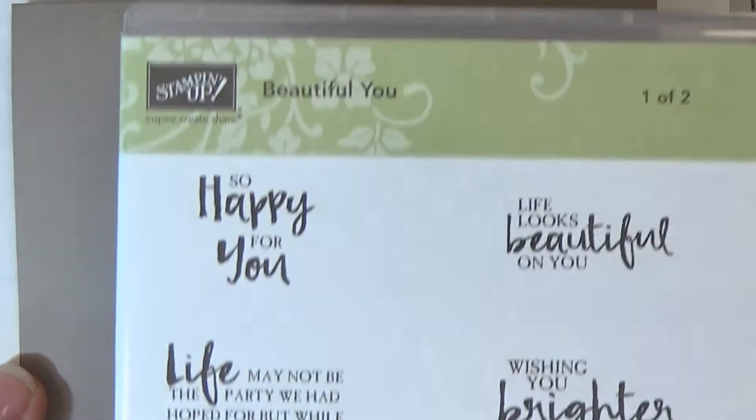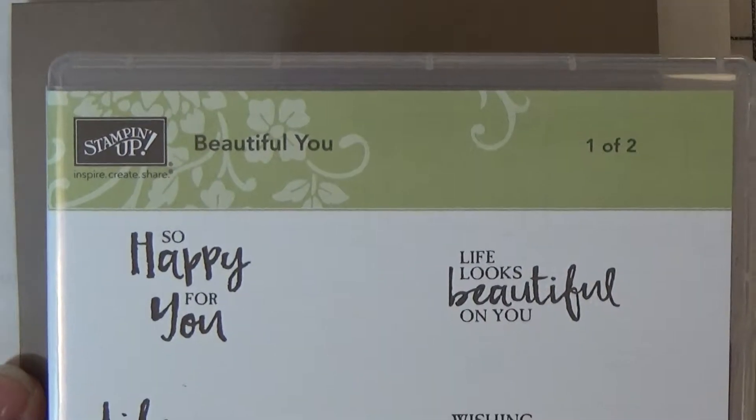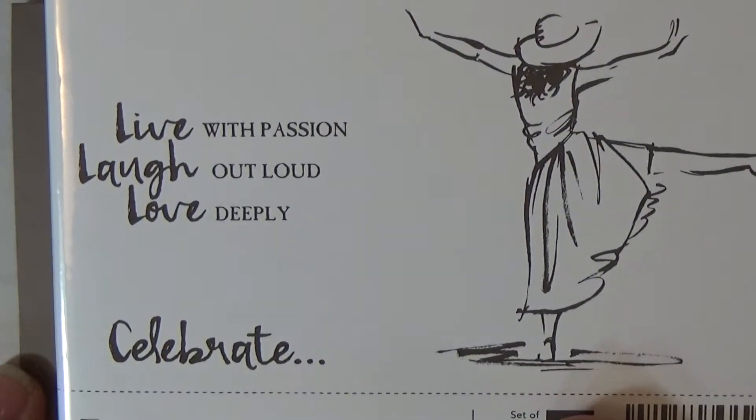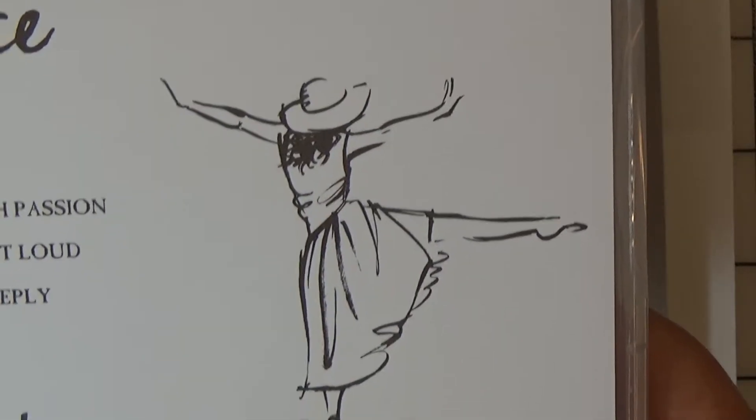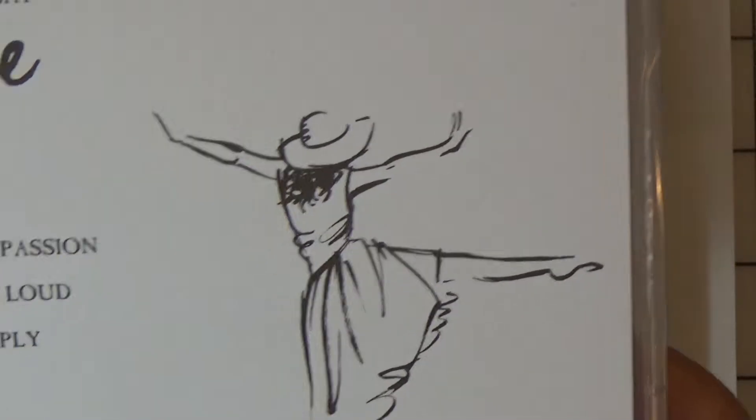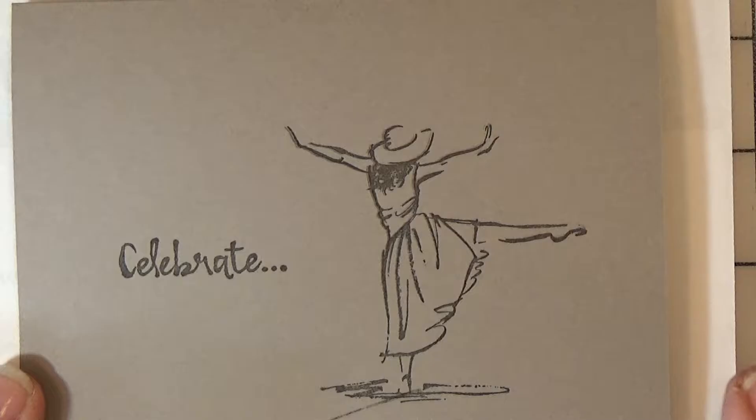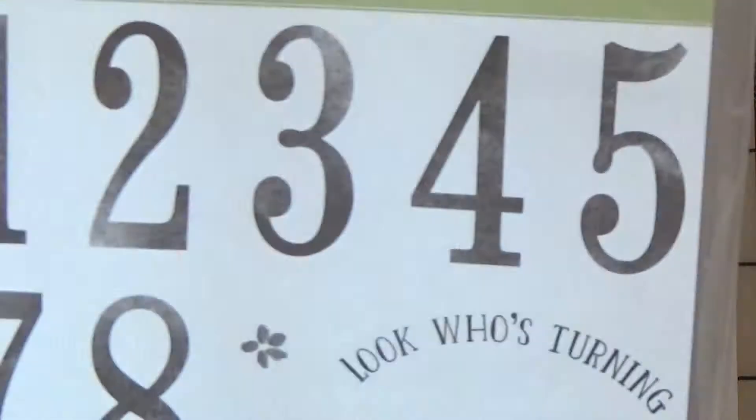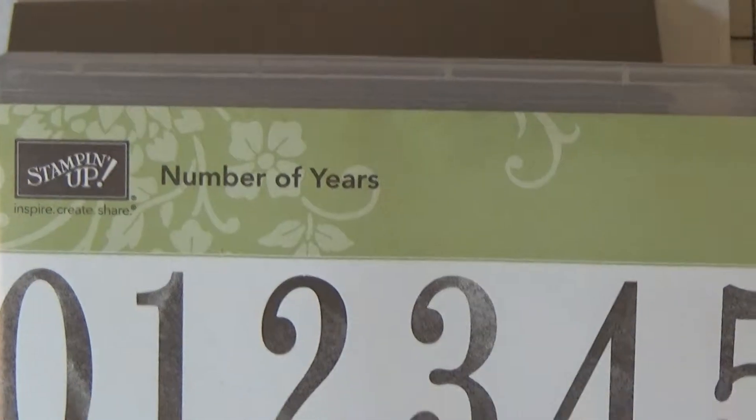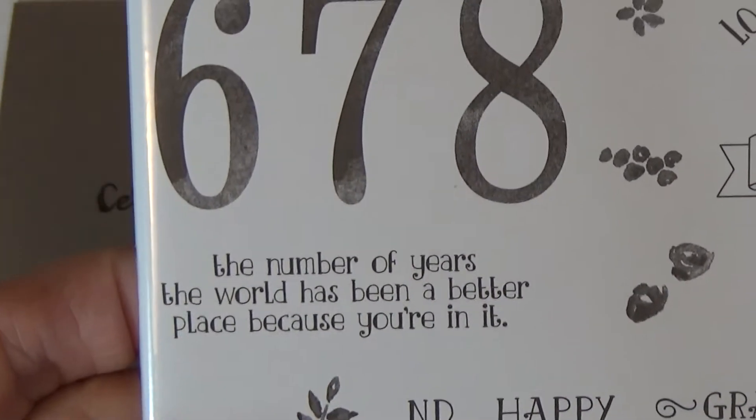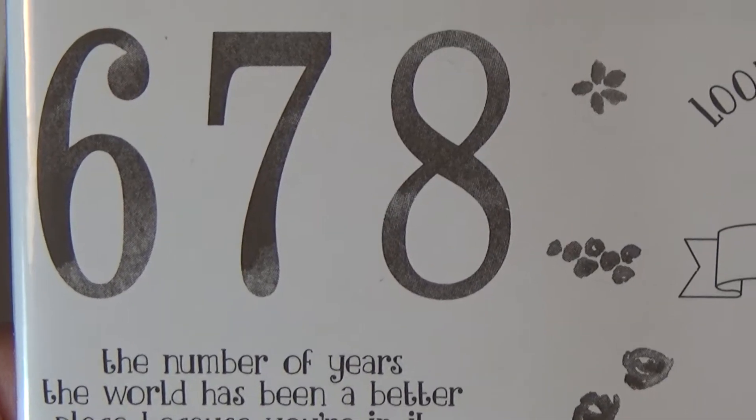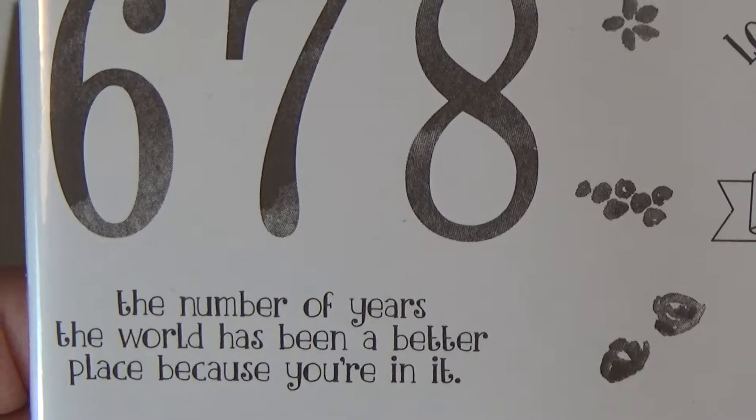The first stamp set is called Beautiful You. I'm going to use the Celebrate and the Girl Dancing stamp, two different stamps. And I'm going to use an inside sentiment from Number of Years: the number of years the world has been a better place because you're in it.